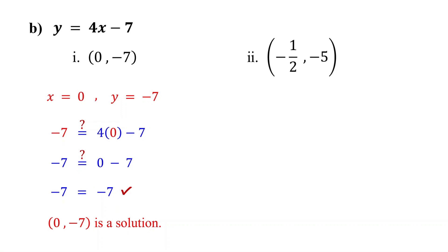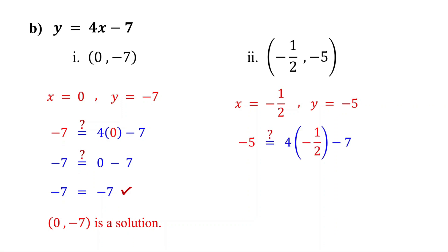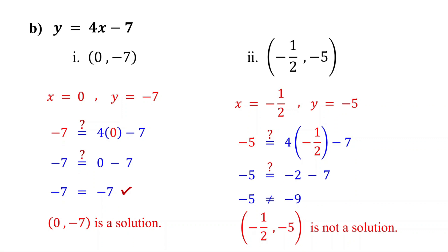For the ordered pair negative 1 half comma negative 5, negative 1 half is the x value and negative 5 is the y value. So substitute negative 1 half for x and negative 5 for y. Then simplify. 4 times negative 1 half simplifies to negative 2, because 4 times negative 1 is negative 4, and negative 4 divided by 2 is negative 2. Negative 2 minus 7 is negative 9. Since negative 5 is not equal to negative 9, the ordered pair negative 1 half comma negative 5 is not a solution.